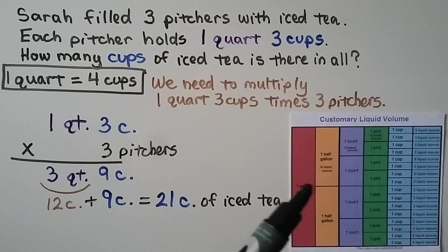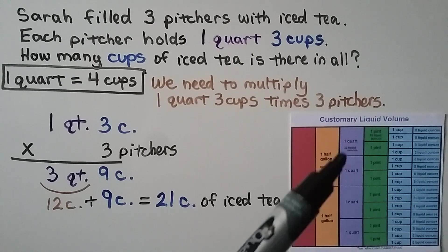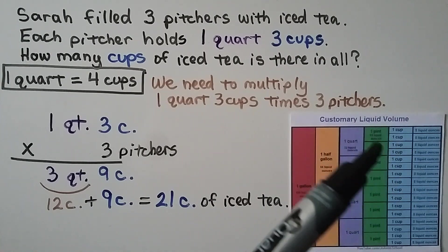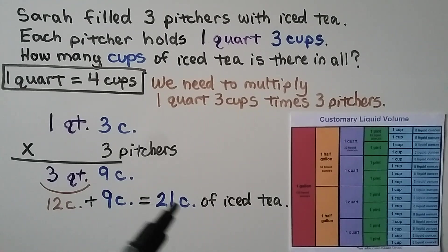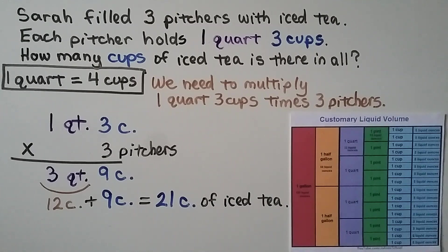Make sure you have a chart if you don't remember the units — how many ounces are in a cup, how many cups are in a pint, and so on. Even if you're using metric measures, make sure you know how many units are in a larger or smaller unit.